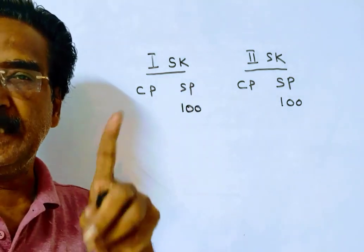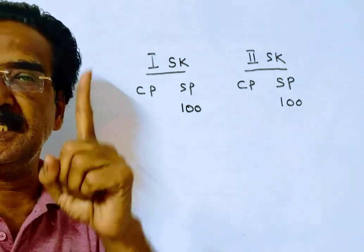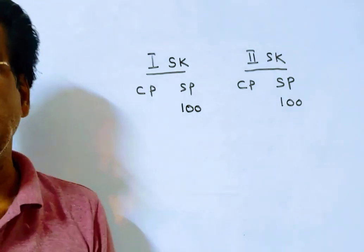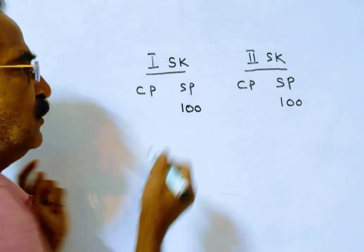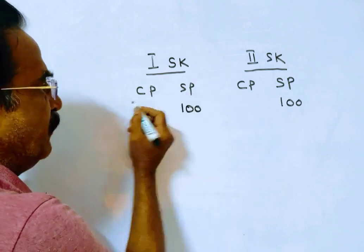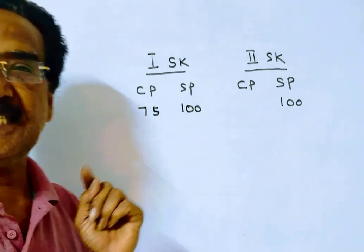The first shopkeeper calculates his profit on the selling price. In both cases the profit percent is 25%. So 25% of 125, selling price minus profit 25, so cost price becomes 75 in the first case.